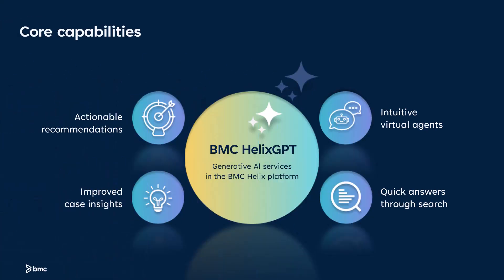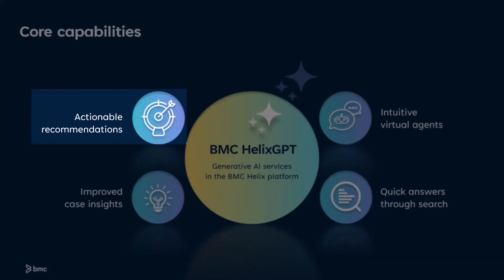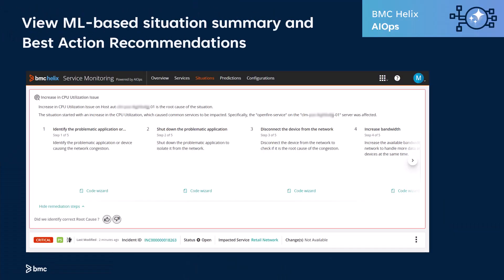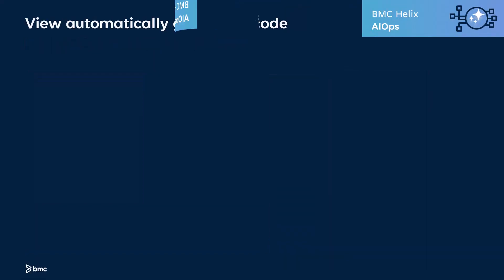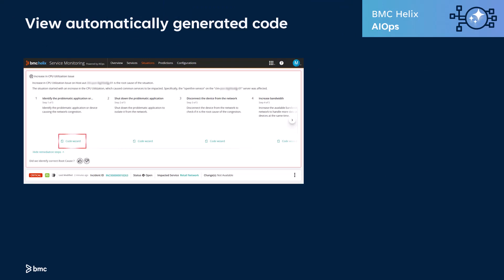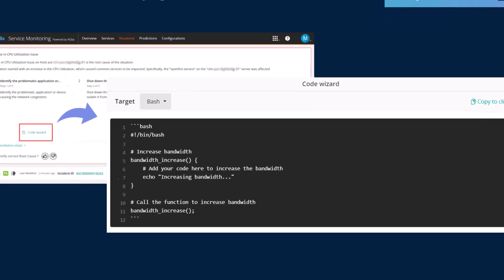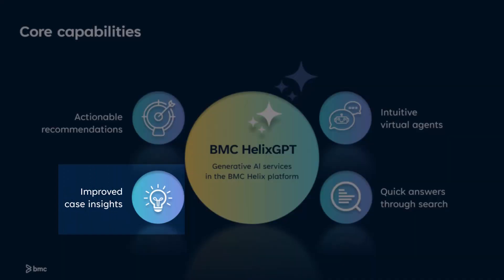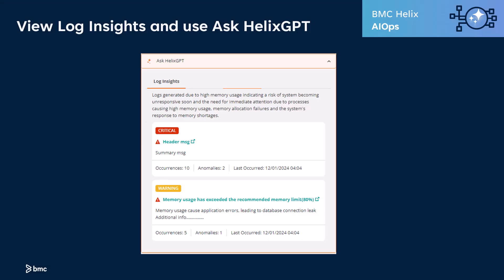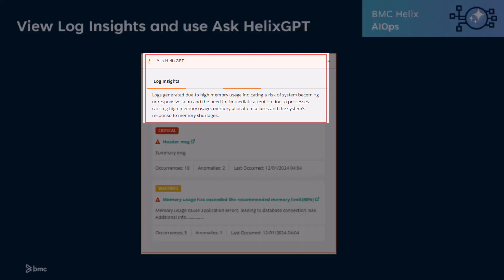Let's now look at how BMC Helix GPT harnesses the power of generative AI to fulfill different use cases. View the summary of ML-based situations and the suggested best action recommendations. View the automatically generated code to implement the best action recommendations, view log insights, and use the virtual agent. Ask Helix GPT to analyze and investigate the situations.